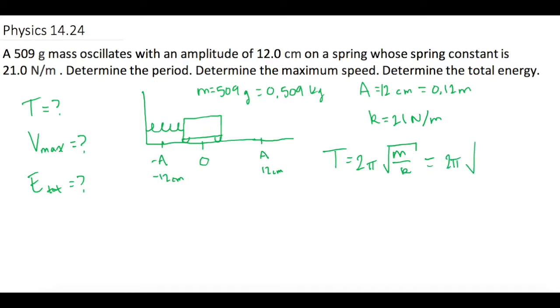So 2π times the mass of 0.509 kilograms. Again, these always need to be in standard units. Divided by a spring constant of 21 newtons per meter. We take the square root, and T equals 0.978 seconds.